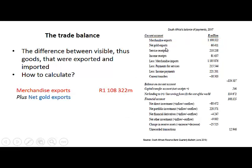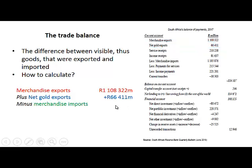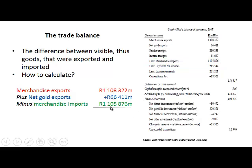To that we add gold exports, which is not included in merchandise exports. Gold exports is 66,411 million rand. Then we subtract merchandise imports of 1,105,876 million rand. Adding the two export figures and subtracting merchandise imports gives us the trade balance of 68,857 million rand.